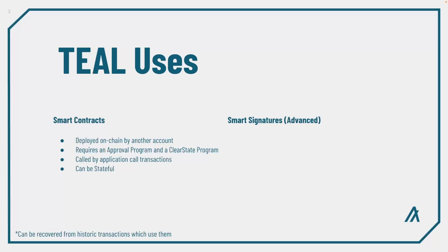A smart contract can be stateful, reading and writing up to 64 global or 16 local key-value pairs. Additionally, smart contracts can utilize box storage if there is a need to hold more data than this on-chain.